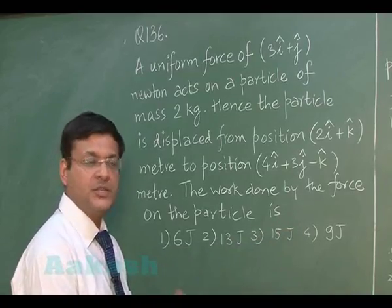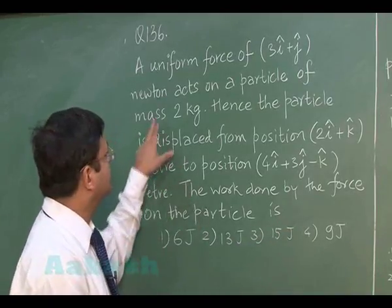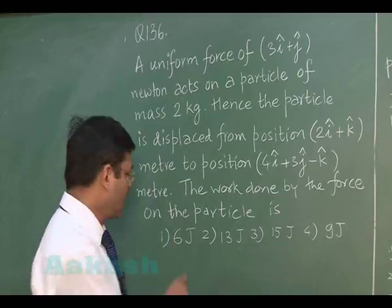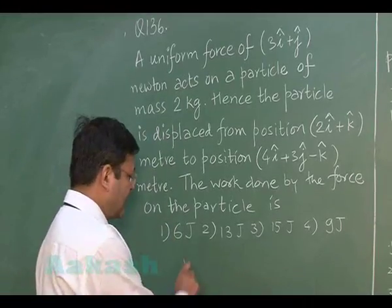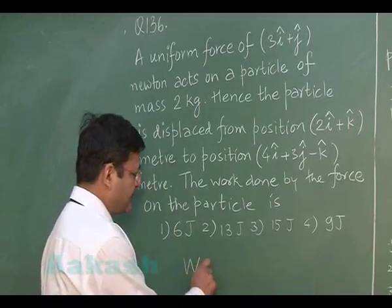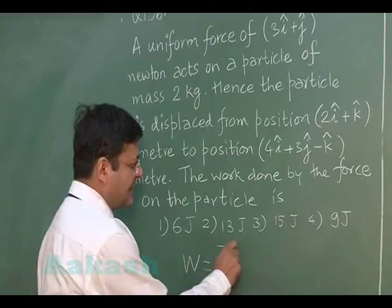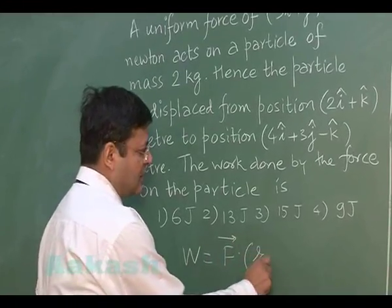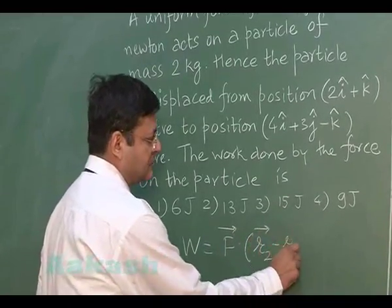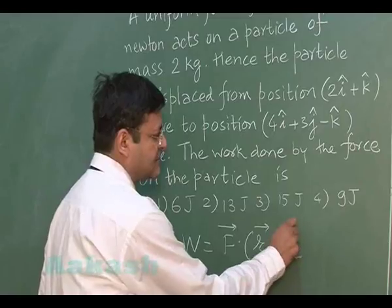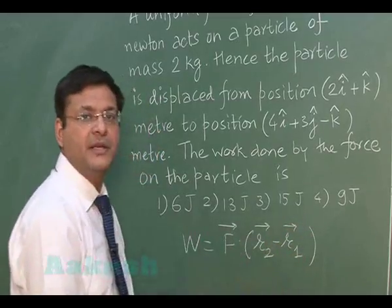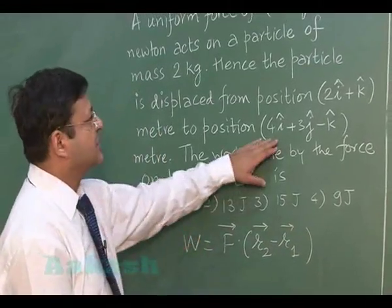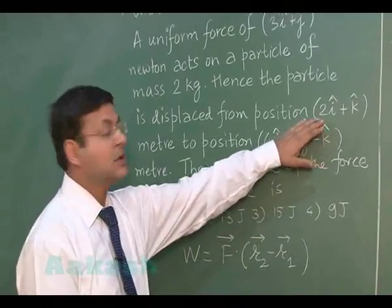In this particular question, note that the mass of 2 kg is immaterial. If you want to calculate work done, it can simply be written as force multiplied by the displacement vector, where the displacement vector is simply the final position minus the initial position.